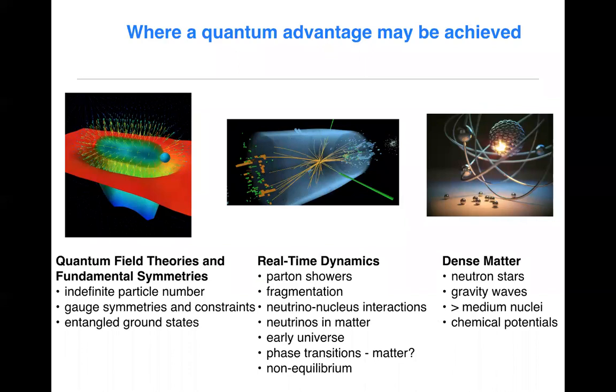As far as subatomic physics goes, I'm really going to be limiting myself to high energy physics and nuclear physics, but high energy physics mainly. The systems that are at the heart of what we're looking to solve are quantum field theories. And so these are systems with indefinite particle number and we have massless particles to contend with. These are defined by gauge symmetries and of course constraints. And the ground states of these quantum field theories are entangled.